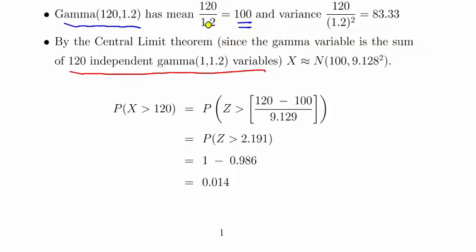We're going to specify this random variable X using the normal distribution with the mean there which is 100 and the variance here which is 83.33, which can be written as 9.128 squared.